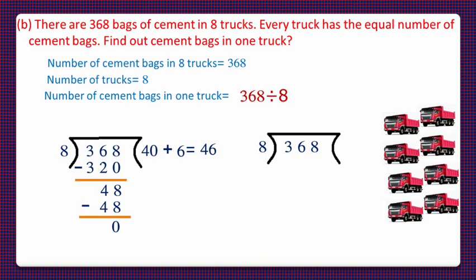So, total 368 are cement bags and 8 are the number of trucks. First, let us read the table of 8 and 8 fours are 32. And on subtracting 32 from 36 we will get 4 as the remainder. Now, we will bring down 8. 4 and 8, 48. Now, again we will read the table of 8. 8 sixes are 48.